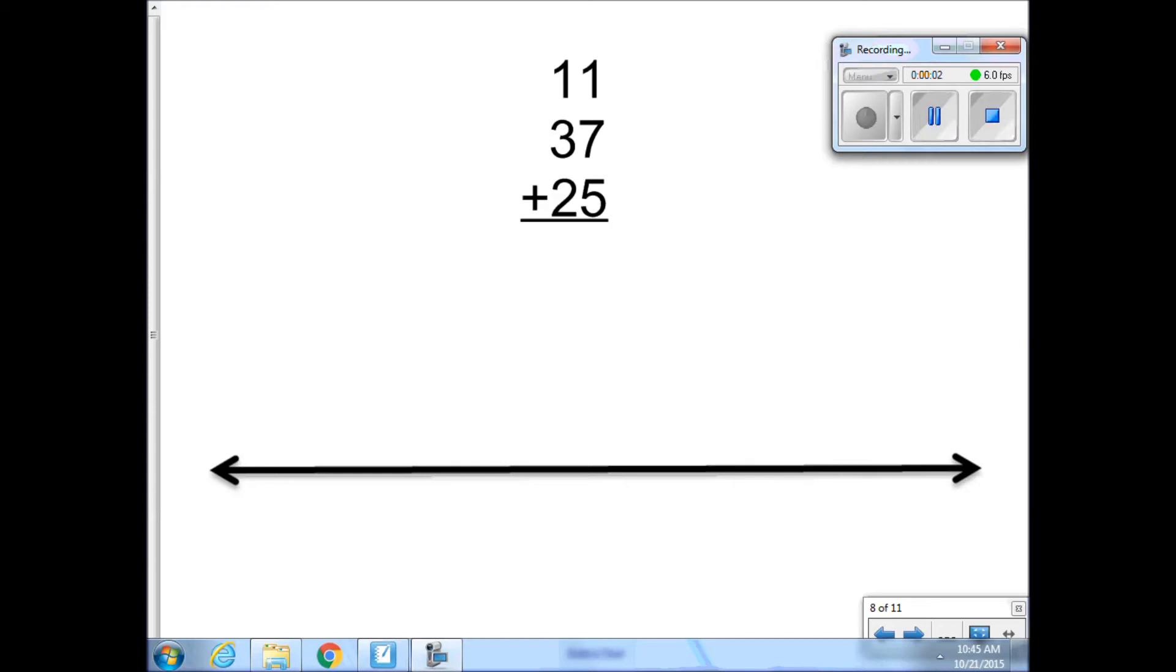Okay, we've been talking and practicing open number line. We've done it with two two-digit numbers. Today we're going to find out that you can also do it with three two-digit numbers. It doesn't matter how many addends you have. But I'm going to show you how easy it is to take what you already know and figure this one out also using an open number line.